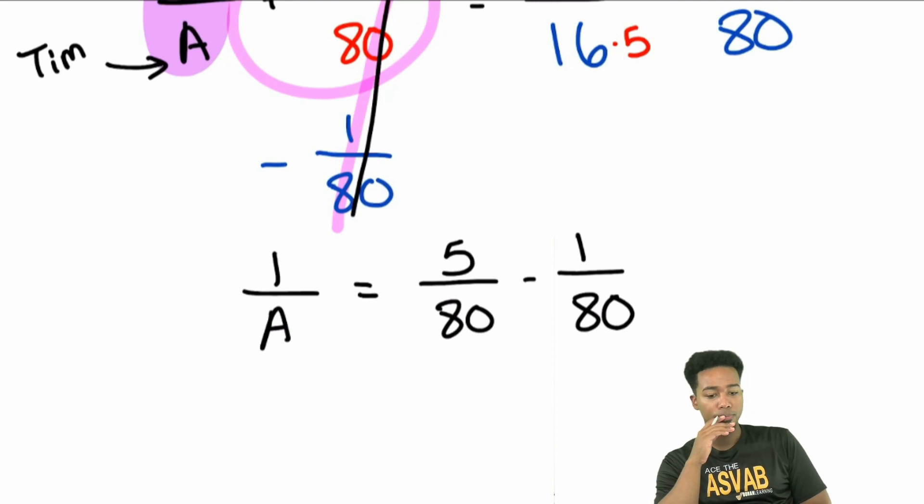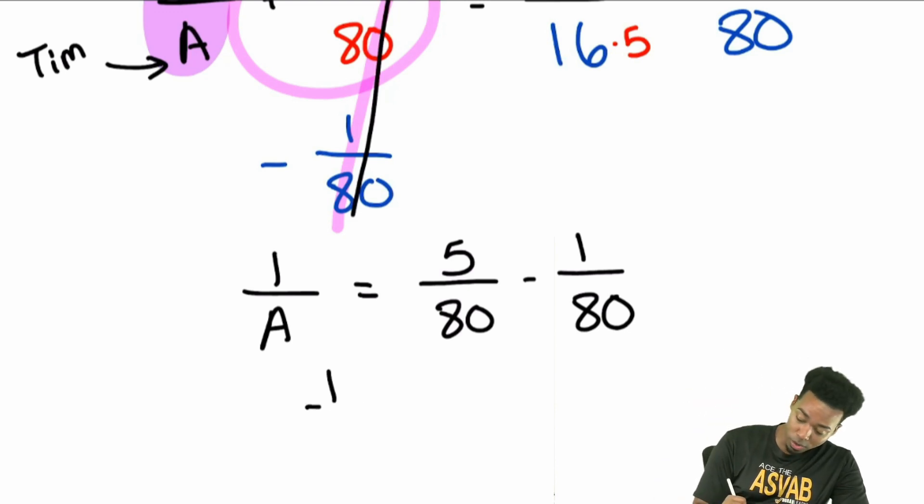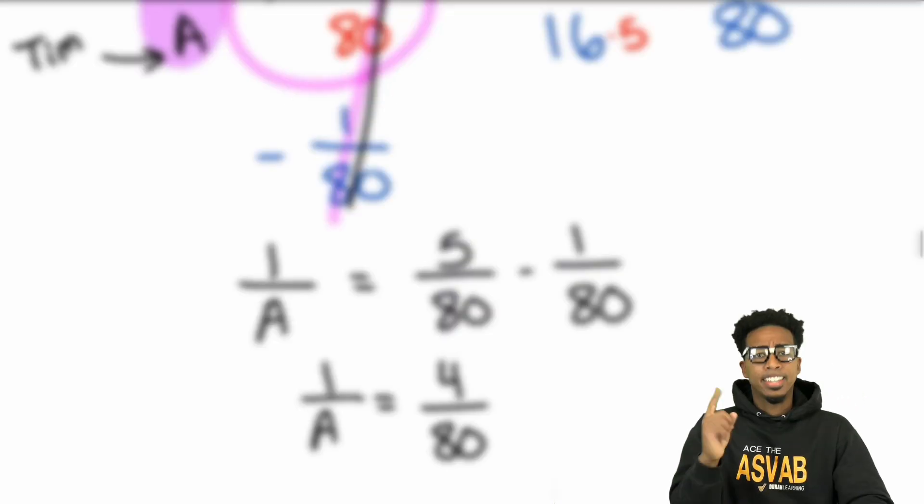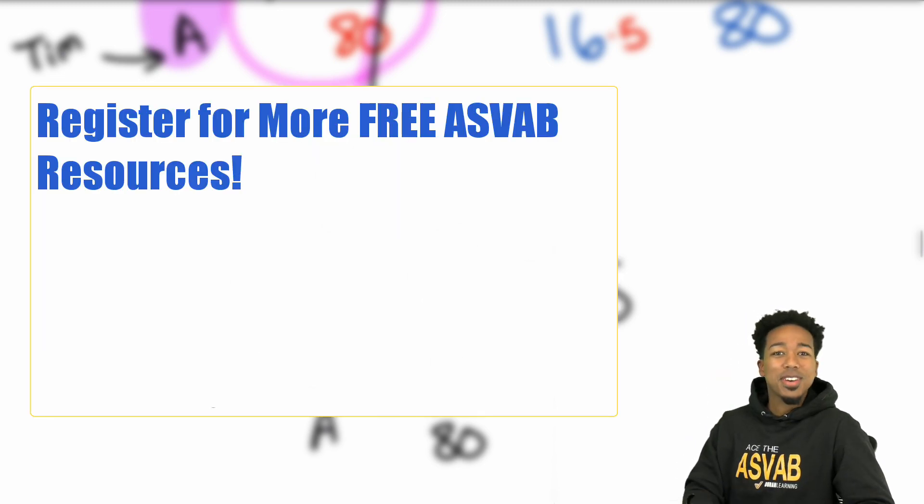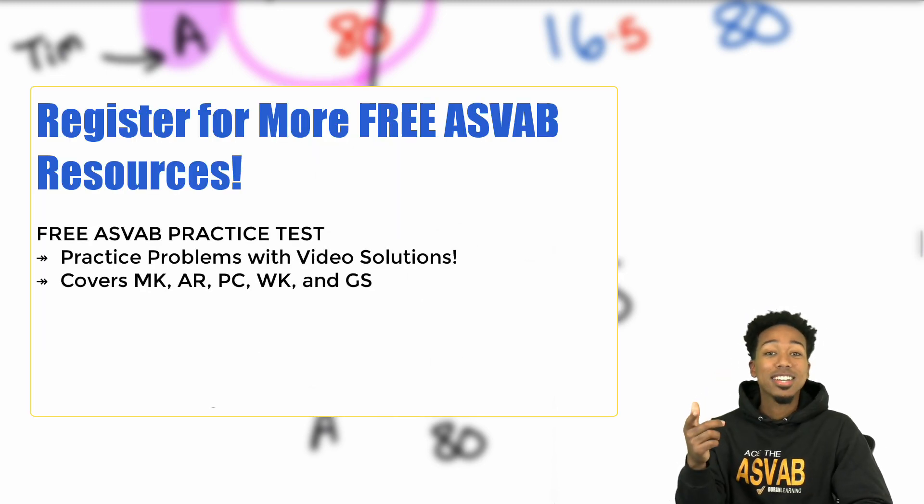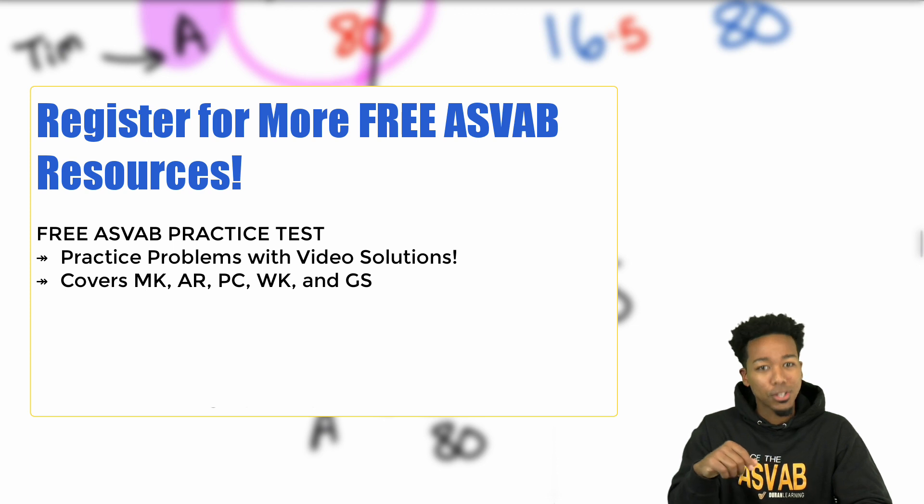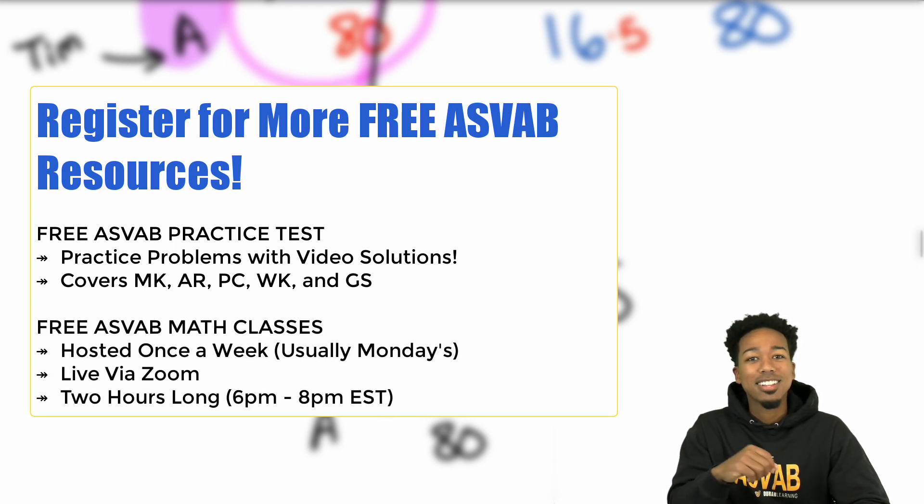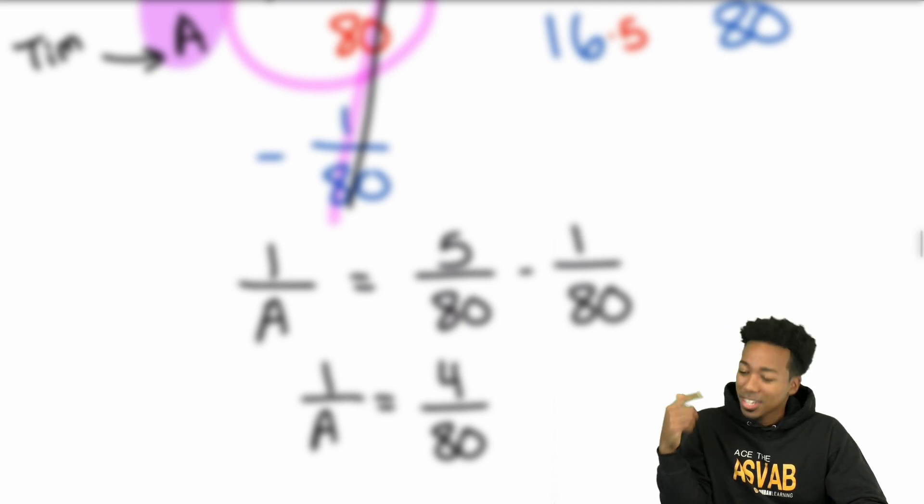What's 5 minus 1? That's going to be 4. So now we have 1 over A equals 4 over 80. And just like this free YouTube video right here my party people, I have a free practice test that comes with video solutions so you can learn from every mistake and a free math class every week, once a week for two hours. Click the link over here to sign up and get started and keep raising that score.